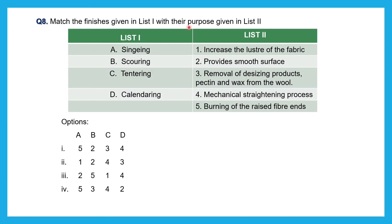Question number eight: Match the finishes in List 1 with their purpose in List 2. List 1 contains: singeing, scouring, tentering, and calendaring. Calendaring is a familiar industrial pressing or ironing process that gives a smooth surface — so D matches with two. Scouring is used in the manufacture of wool to remove desizing products, pectin, and wax — so B matches with three.